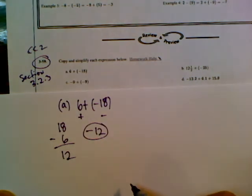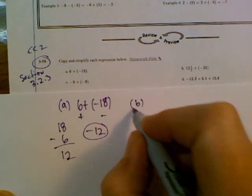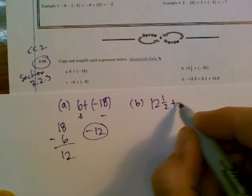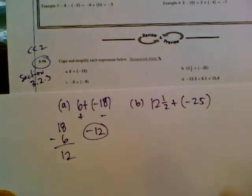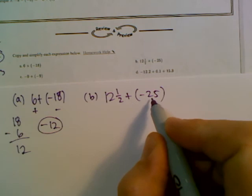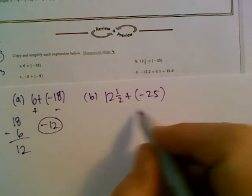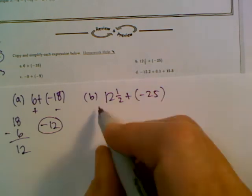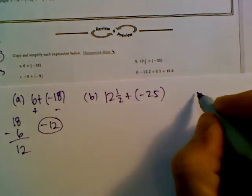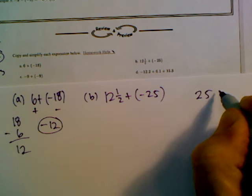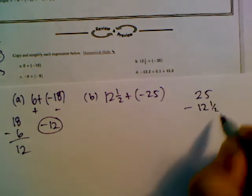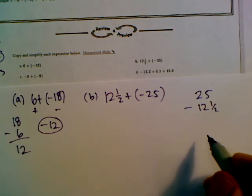There's A and B. B is 12 and a half plus negative 25. Again, since I have a positive and I'm adding that to a negative number with integers, when you're adding integers and you have opposite signs, subtract the numbers. So we need to look at what is 25 minus 12 and a half.